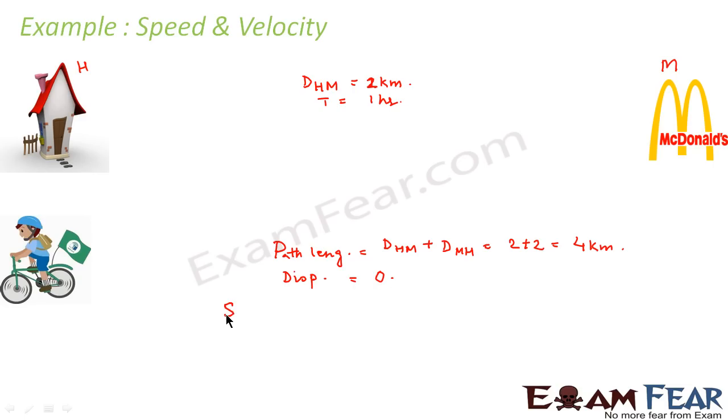Therefore, we discussed that speed is equal to path length divided by time. So in this case, path length would be 4 kilometers and time would be 1 hour. That means speed would become 4 kilometers per hour. Whereas when we talk of velocity, it is displacement divided by time taken. So velocity would become 0.